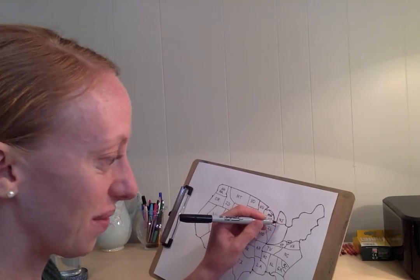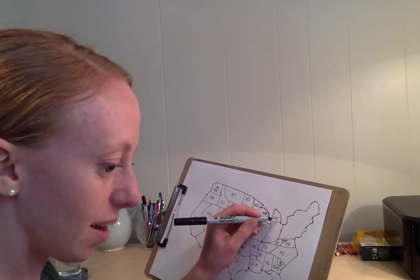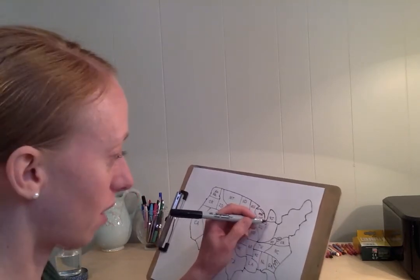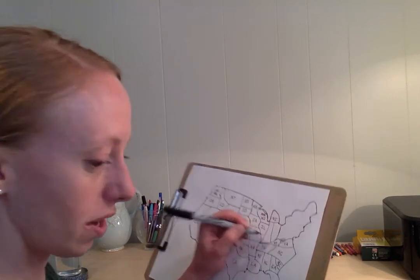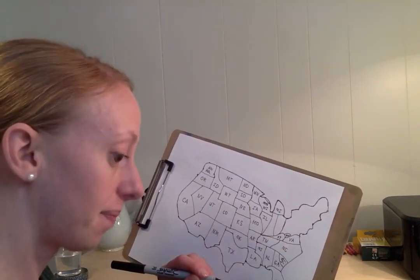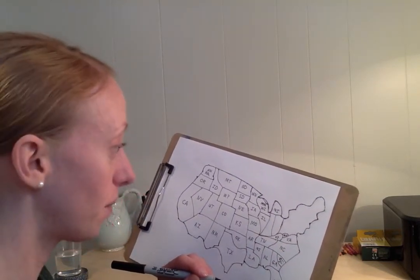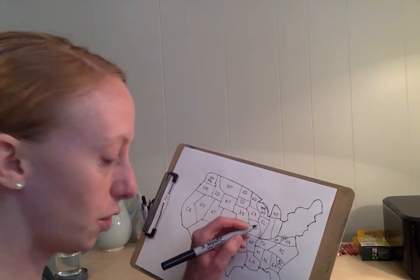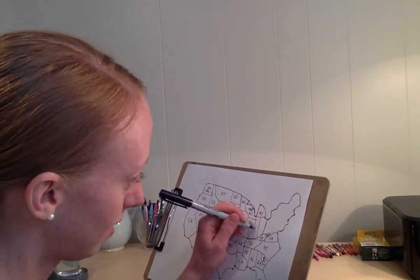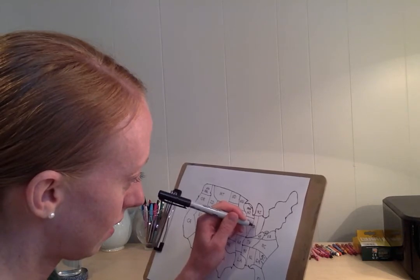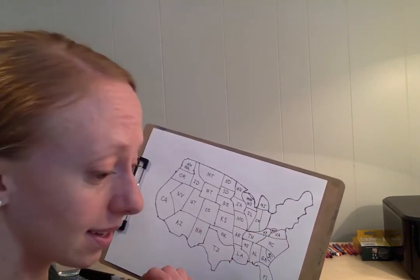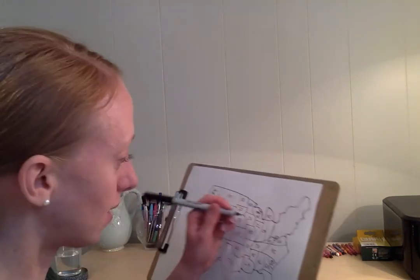We've got Michigan up here, Kentucky down here. I got a little off but I'm going to draw a line straight down. Under Wisconsin and Illinois, next to Illinois is Indiana, and next to Indiana is Ohio.